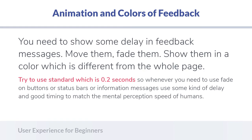Here are some ways to make your feedback notifications or messages on interactive elements better. First, if feedback is happening very fast, add some delay — the standard time is 0.2 seconds, so no less than that. Don't increase it to half or one second because after one second users get worried. Try to use a distinct, sharp color and a different placement or a border to show it differs from the rest of the page. You can also use animations like fade or moving in and out on buttons, status bars, or notification messages. Match the animation speed to human mental perception speed.